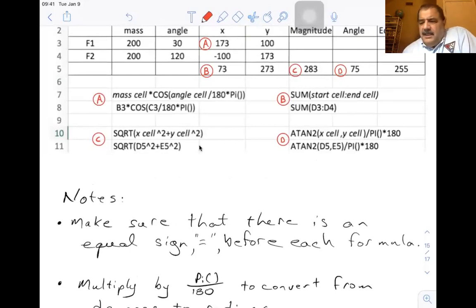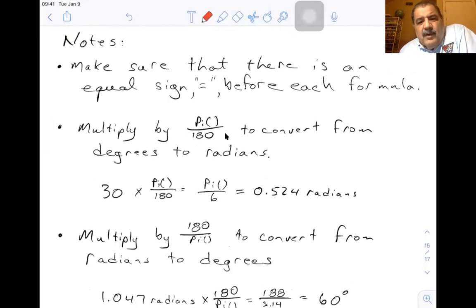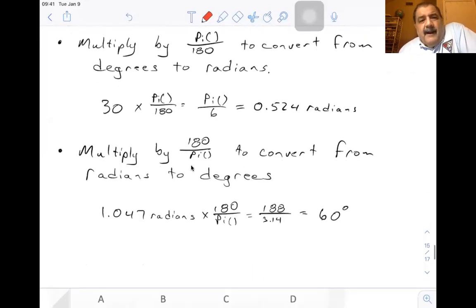Multiply by pi over 180 to convert from degrees to radians. 30 times pi divided by 180 is pi over six. That's equal to 0.524 radians. You multiply by 180 over pi to convert from radians to degrees. It's going to return radians. You want it in degrees. So it's 1.047 radians times 180 over pi. That shouldn't be 188. That should be 180 divided by 3.14. And that comes out to 60 degrees.